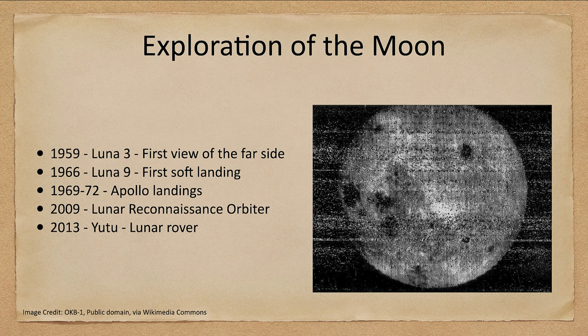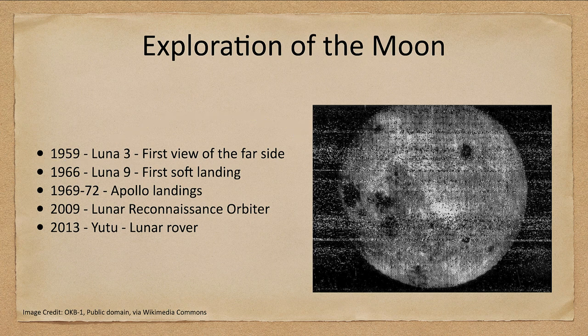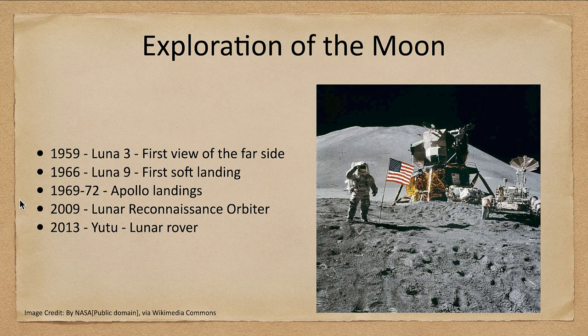Now let's talk about how the moon has been explored. We've been able to see the moon since ancient times but had not been able to see the far side until 1959, when the Luna 3 spacecraft traveled around and gave us the first image of the other side. While the image looks poor by today's standards, it was amazing at the time. A few years later in 1966 we had the first soft landing on the moon, and then between 1969 and 1972 we had the Apollo landings, where we landed a total of six times to explore and collect samples.